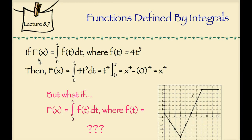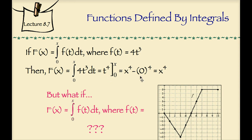If uppercase F of x equals the integral from 0 to x of lowercase f of t dt, where f of t equals 4t cubed, then F of x is that integral from 0 to x of 4t cubed dt, which equals t to the 4th from 0 to x, which is x to the 4th minus 0, equaling x to the 4th.